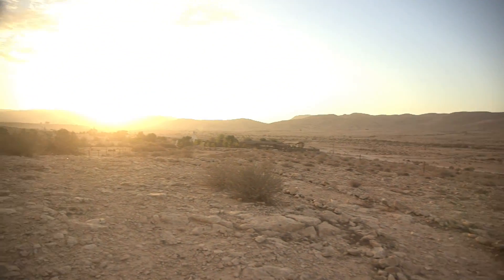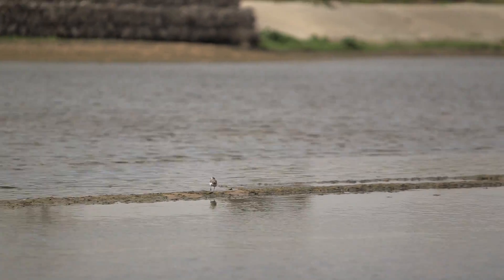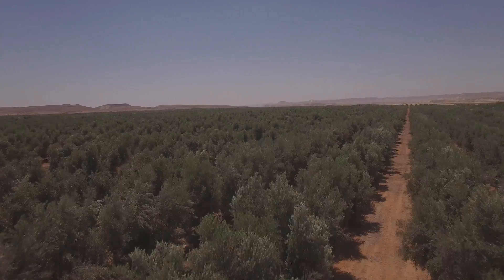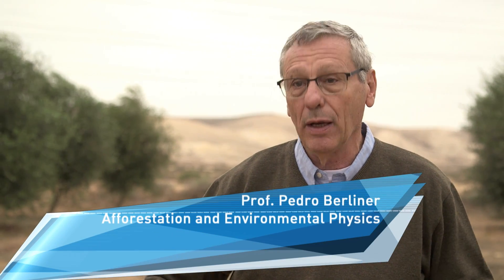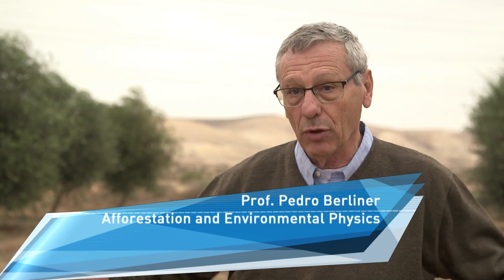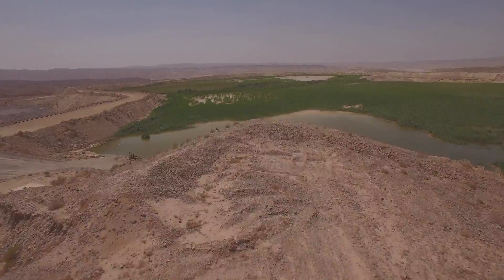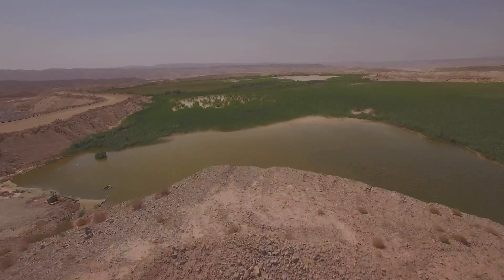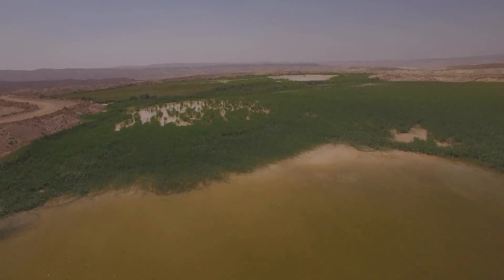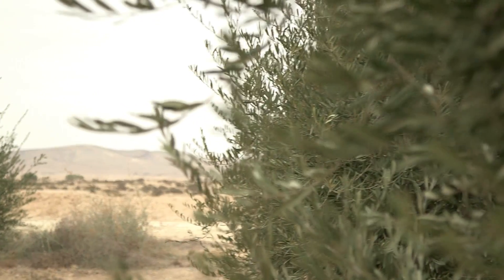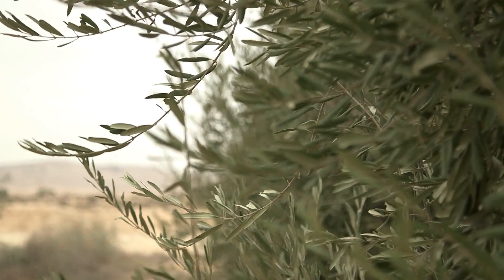Floods are very common in deserts. We can divert the water into plots that have been prepared beforehand so that the water flows into these plots. It looks like a small lake, and the water then slowly is absorbed by the soil. Thereafter, we plant trees. This is the most efficient way of storing water.